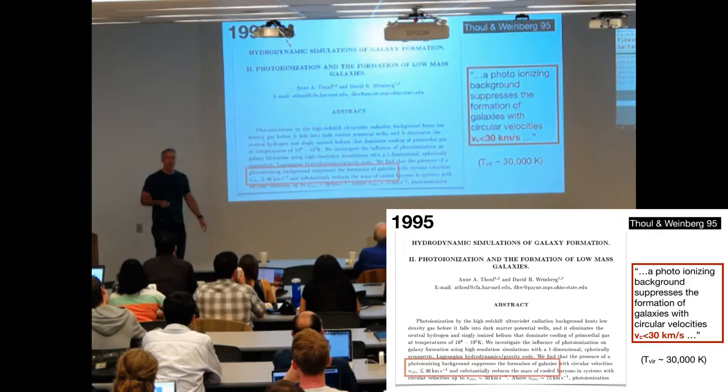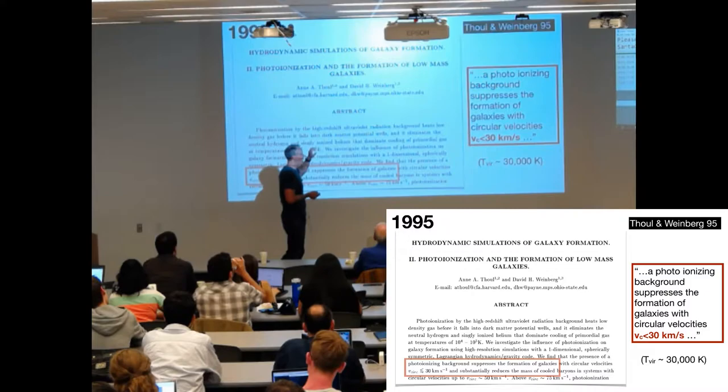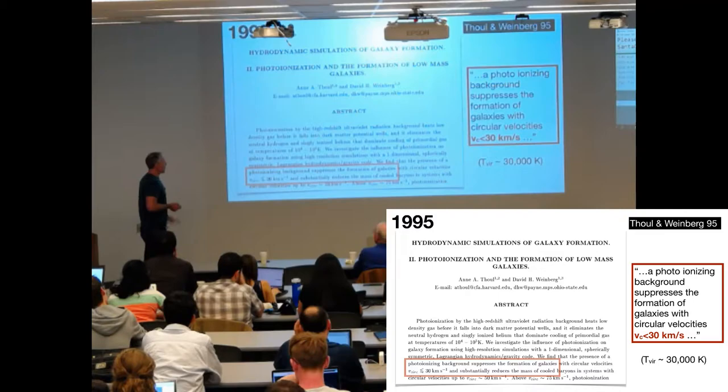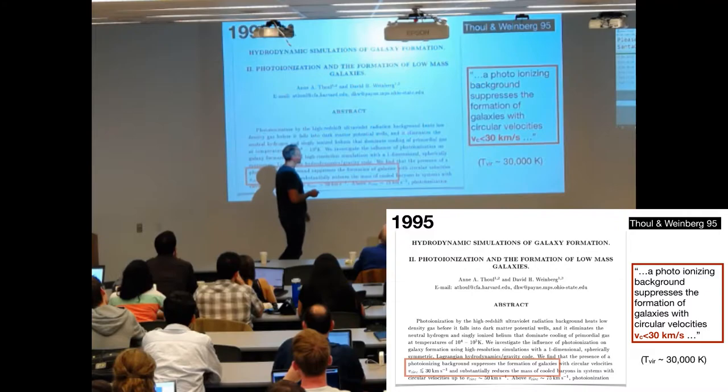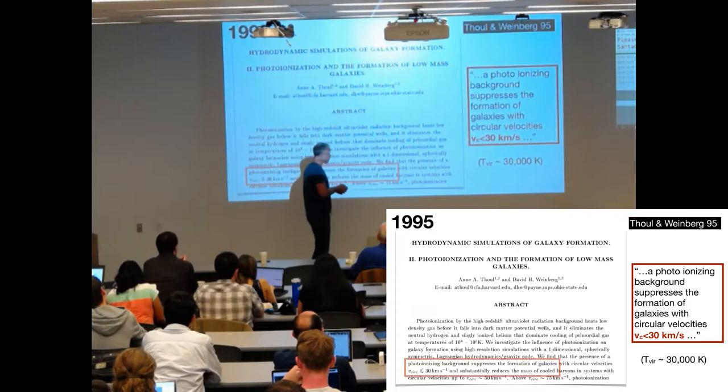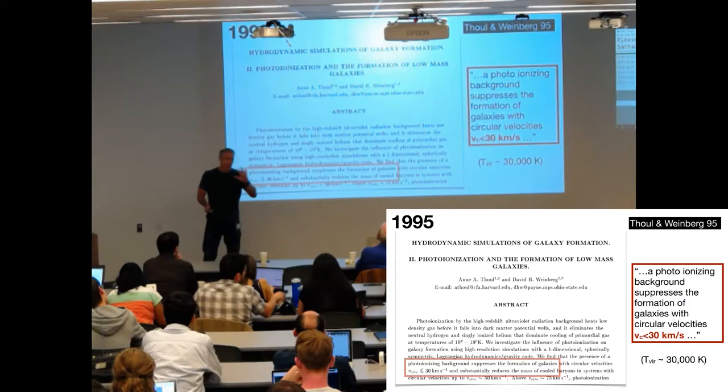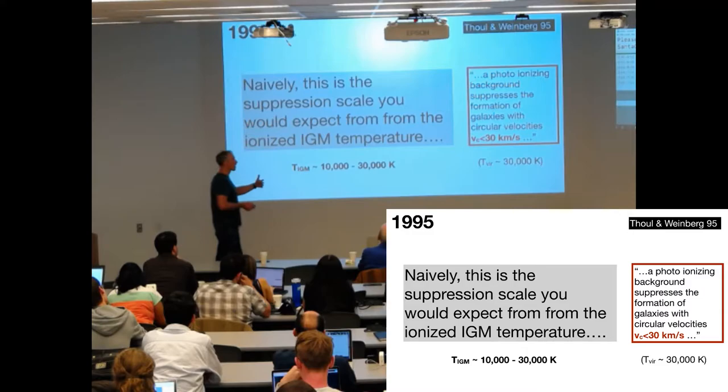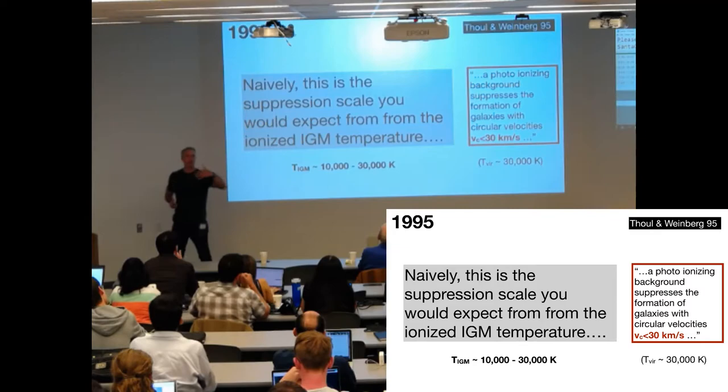In 1995, this was the first hydrodynamic simulation where people tried to look at the effects of an ionizing background on the formation of little bitty galaxies. And Estafio had worked this out analytically, but Thule and David Weinberg did these very nice simulations where they simulated the formation of dwarf galaxies, and they concluded here, right here, in the abstract, that a photoionizing background suppresses the formation of galaxies with circular velocities less than 30 kilometers per second. These things have virial temperatures of about 30,000 K. That's not that surprising. This is basically, naively, where you would expect things to start suppressing galaxy formation, because that's roughly the IGM temperature after reionization.